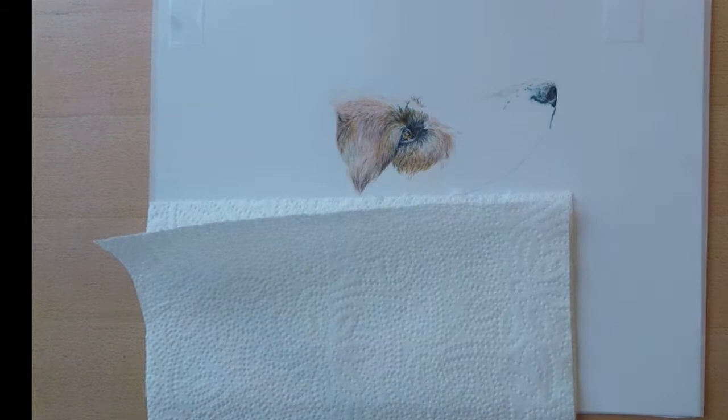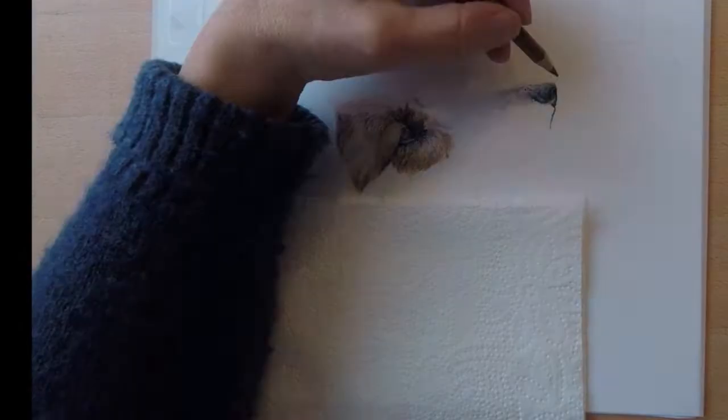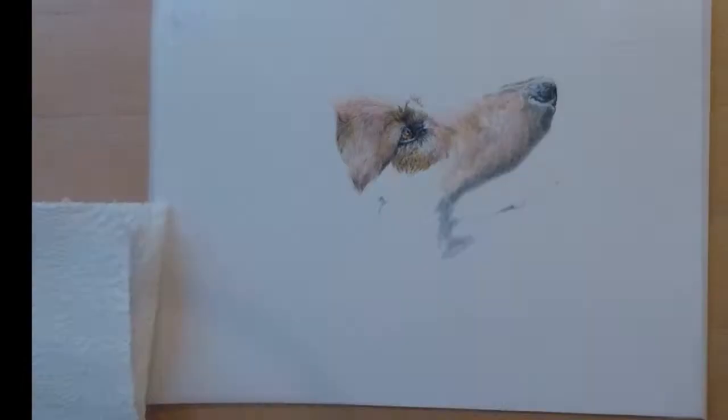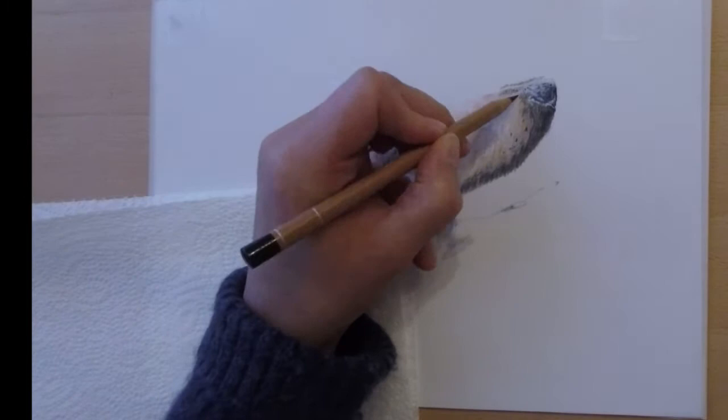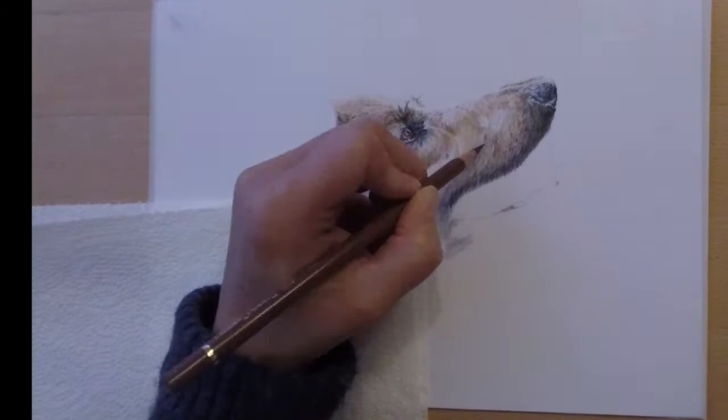I can create these lighter hairs using several methods. Scratching with a sharp knife, erasing with my eraser pencil, or last of all I can use a magical mixture. Of course that's not the real name, but I think it should be named that way. It's a mixture of titanium white powder with touch-up texture from Brush and Pencil.